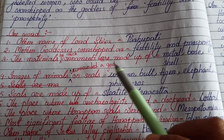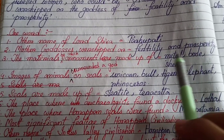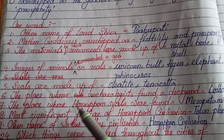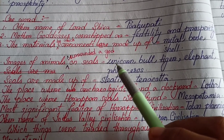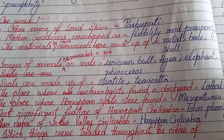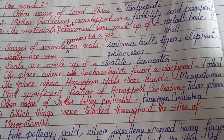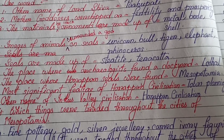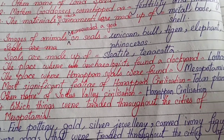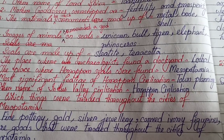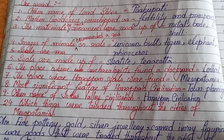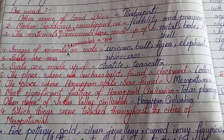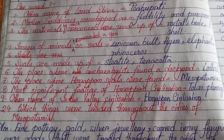Other name of Lord Shiva — Pashupati. Mother goddess worshipped as fertility and prosperity. Materials by which ornaments were made — metal, bone, shell. Images of animals surrounding a god on seals — unicorn, bull, tiger, elephant, rhinoceros. Seals are made of steatite and terracotta. The place where archaeologists found a dockyard — Lothal. The place where Harappan seals were found — Mesopotamia. Most significant feature of Harappan civilization — town planning. Other name of Indus Valley Civilization — Harappan civilization.